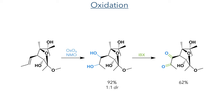With this protection in place, the alkene produced by the enyne cyclization was oxidized to a diol again using osmium tetroxide, producing the product in a 92% yield and a 1 to 1 dr. This lack of stereocontrol wasn't an issue, however, as these hydroxyl groups were oxidized to ketones using IBX in a 62% yield, and thus the chirality at these centers was lost.